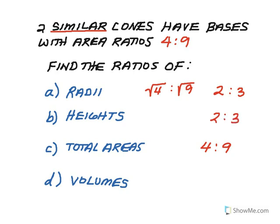So 2 to 3 is the A to B. And then the 4 to 9 is the A squared to B squared. So now to find the ratios of their volumes, that's going to be A to the third to B to the third. So it's going to be 2 to the third to 3 to the third. So in simplifying that, that is 8 to 27. That will be the ratios of the two similar cones' volumes.